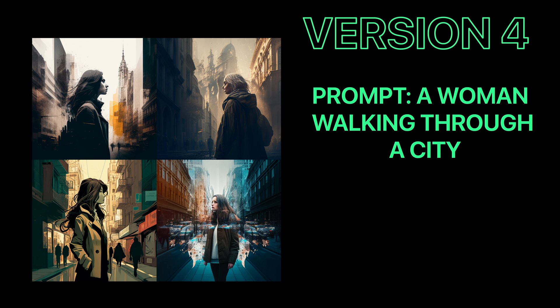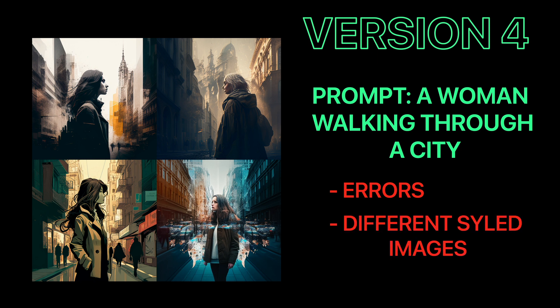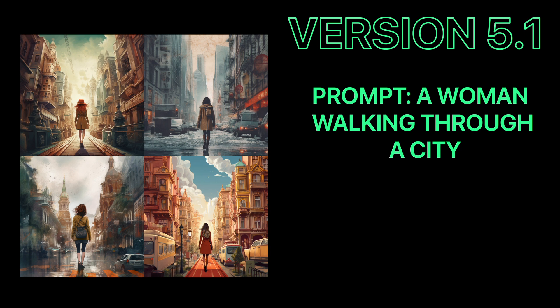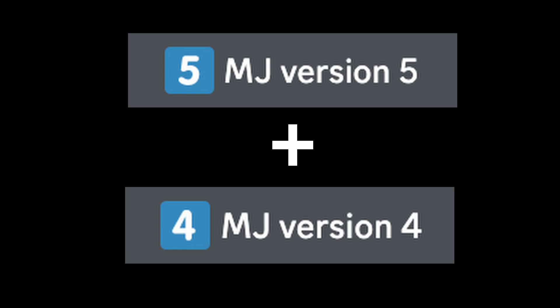With the prompt 'a woman walking through a city,' version 4 gave strange images with errors, all looking very different. Version 5 produced very realistic results. In version 5.1, the results were very artistic and unique — all completely different. Think of 5.1 as a mix of version 5 and version 4, but better. Adding 'ultra HD' to the prompt in 5.1 gives much more detailed images while keeping the artistic feel.